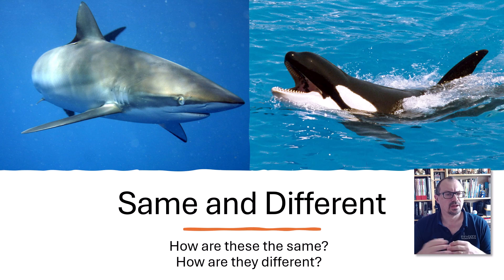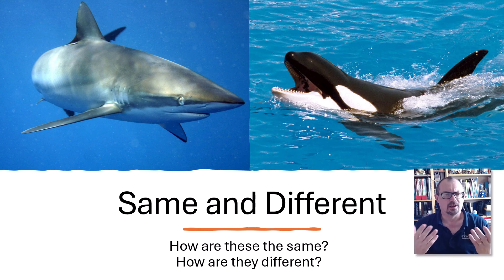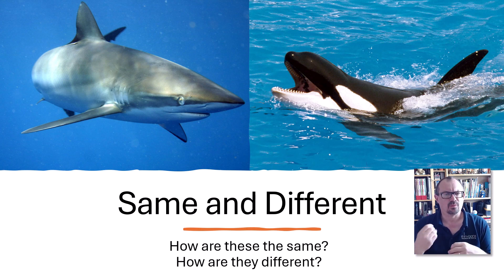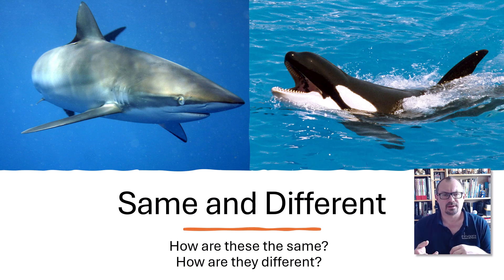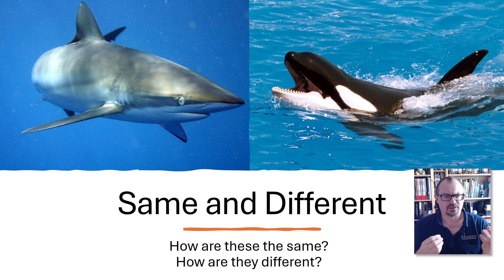We could do same and different - for example we've got a whale and a shark. We need to show what we know about animal classification. How are these the same? Well, they have very similar body plans, very similar ecological niche, and they live in the same habitat. But how are they different? Well, one is a mammal and one is a fish. So one breathes air and has lungs, has warm blood; one has cold blood and gills. One can give birth to live babies and suckle them, while the other may hatch eggs that are not attached to the mother by a placenta.